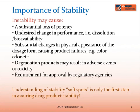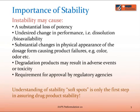The FDA and ICH have published guidelines for conducting stability studies and reporting data. The first step to assess potential drug product stability issues is to look at the structure, identify soft spots, and then potential degradants.